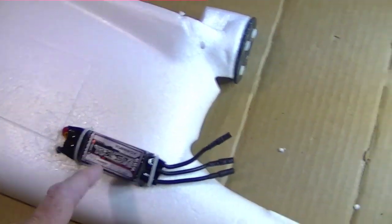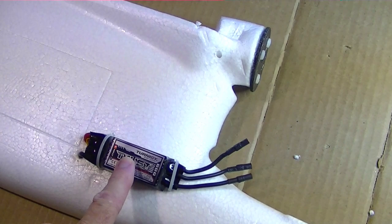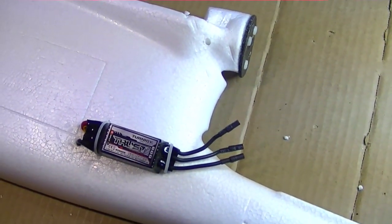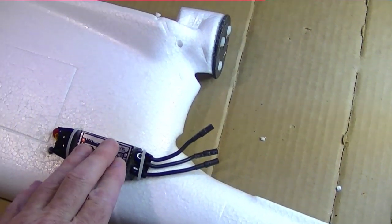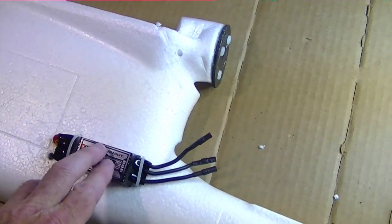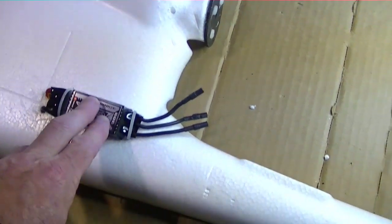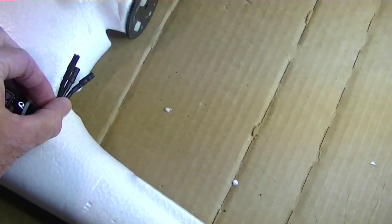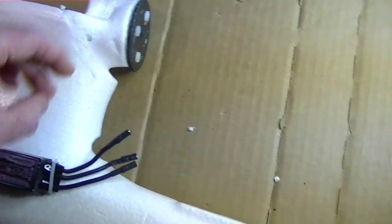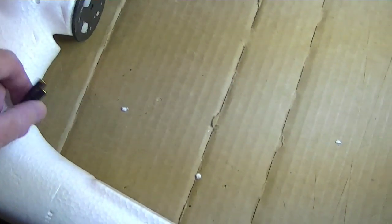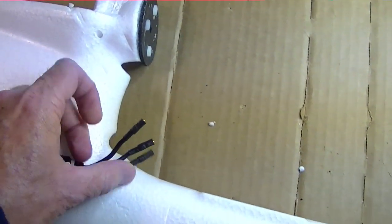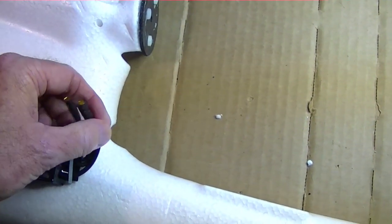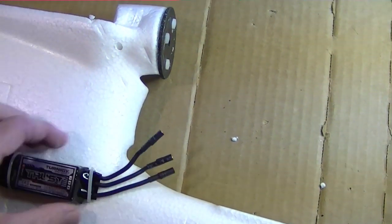So I've decided to mount the ESC, or the electronic speed control, on the outside of the plane to provide cooling and to free up space on the inside of the plane. I've also kept the wire short here between the ESC and the motor so that there won't be extra wiring causing EMF emissions getting into our radio equipment.